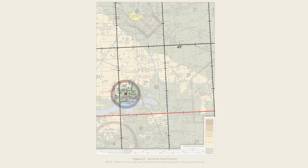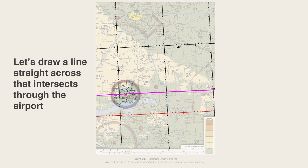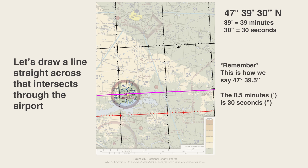Now that we know 48 degrees is up here and the next line is 47 degrees 30 minutes, we can count all the little hash marks up to Garrison Airport and figure out exactly what line of latitude it's on. Counting the hash marks going up from 30 minutes, we go up about another 9 to 10 hash marks, making it roughly 39 and a half minutes. We can further specify that as 39 minutes and about 30 seconds, since it's about halfway through. So our latitude is 47 degrees, 39 minutes, and about 30 seconds north.